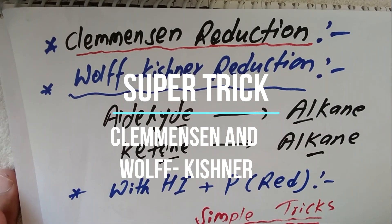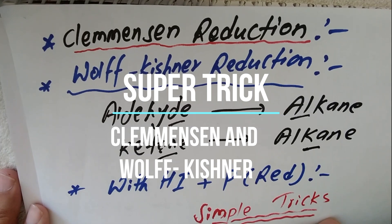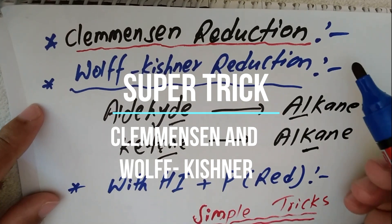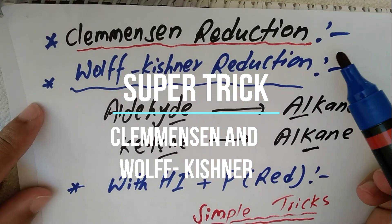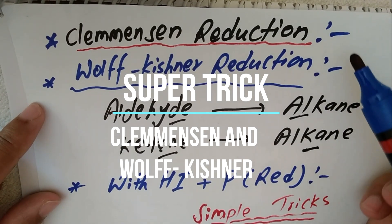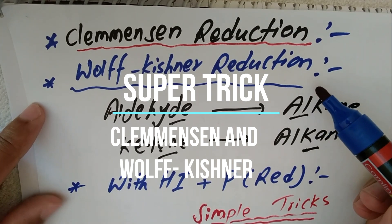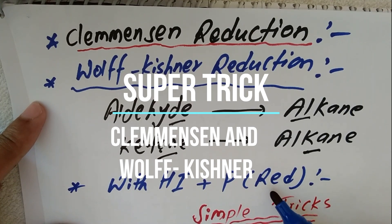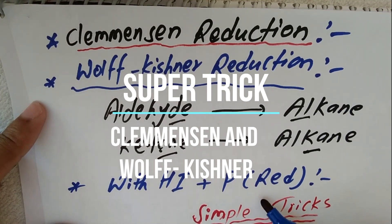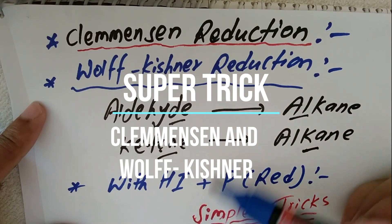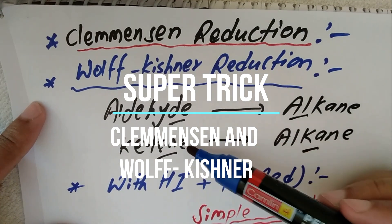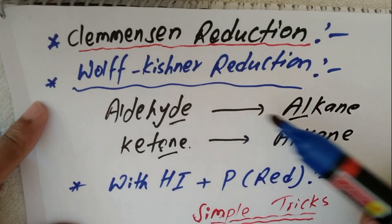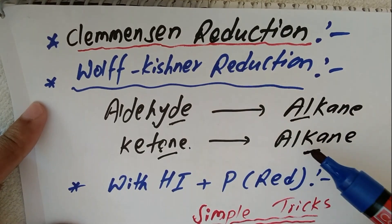Hello students, today we are going to study the chemical properties of aldehyde and ketone, and three very important reduction reactions: Clemmensen reduction, Wolff-Kishner reduction, and reduction with hydrogen iodide and red phosphorus. In all these reduction reactions, aldehyde or ketone is converted into alkanes — aldehyde gives alkanes, ketone also gives alkanes.